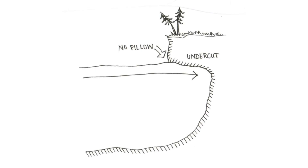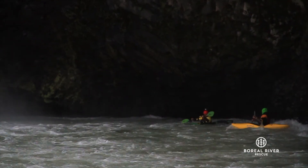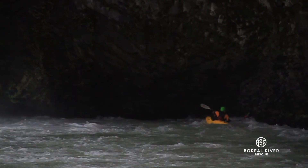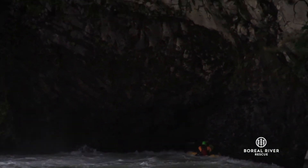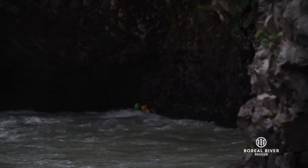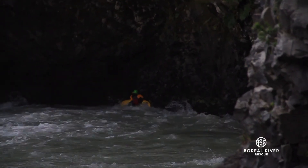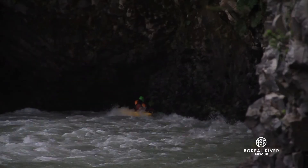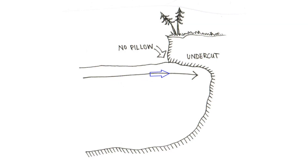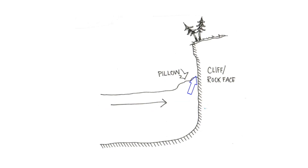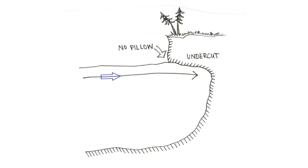An undercut is a feature that occurs when the water flows into a cave under the riverbank or the sloping side of a boulder. If a swimmer gets pushed into an undercut, they can get entrapped and pinned underwater by the force of the current. Undercuts can be very dangerous since the entrance of the cave can be entirely under the surface of the water, making it difficult to even notice or know it's there. One way to check for undercuts is to look carefully at the places where the water is flowing into boulders, islands, and riverbanks. If the water is hitting a solid wall, we'd expect it to deflect off and cause a pillow. When water is flowing toward a rock feature and disappearing instead of getting deflected, that's the sign of an undercut.